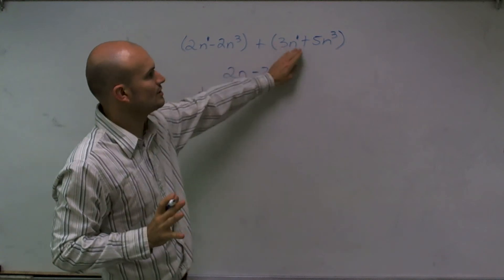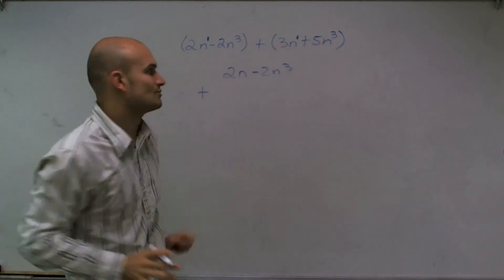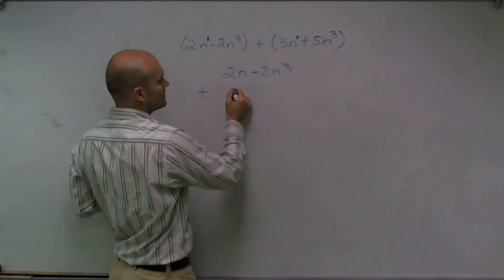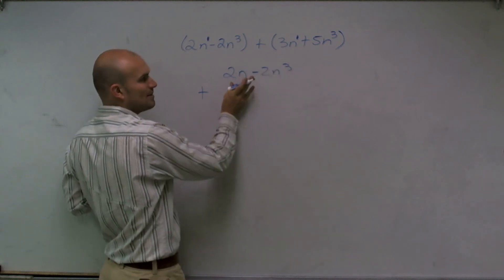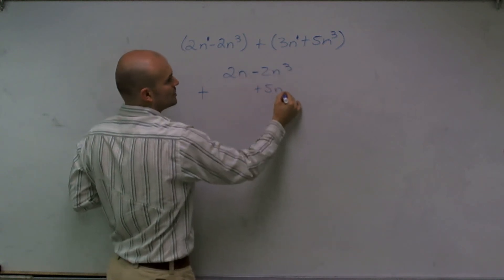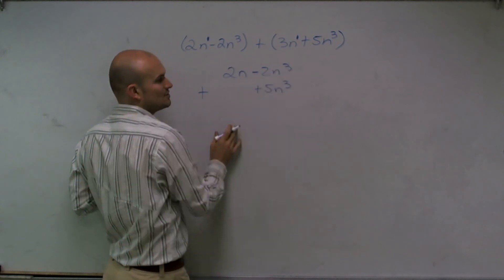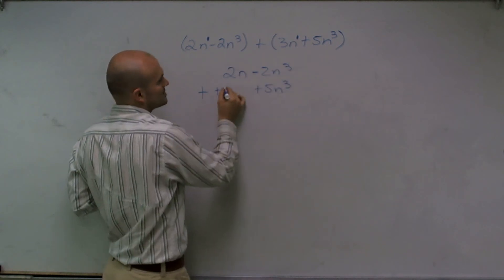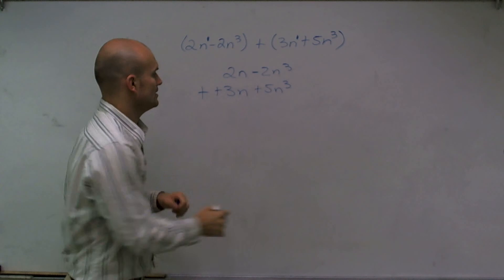Now it's really important to make sure that you align your polynomials correctly. I can only add a positive 5n cubed to the negative 2n cubed. And then I have plus 3n.